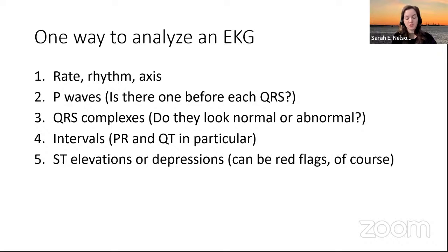Looking at the P waves, the major question is: is there one before each QRS? The best way to look at this is by examining that 10-second strip at the bottom of the EKG, because that'll show you right away if you can see those P waves. If you don't see them, you're thinking more along the lines of AFib, which can have real implications for how we treat these patients.